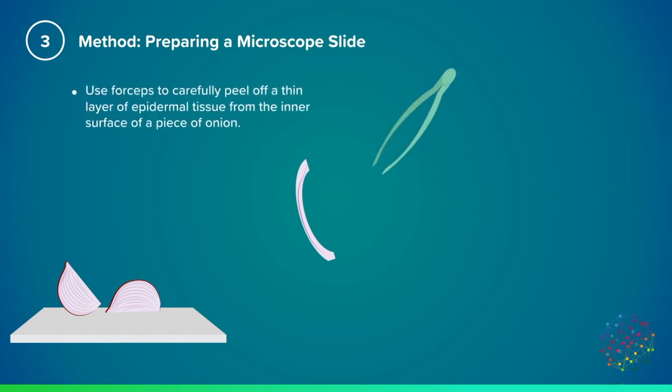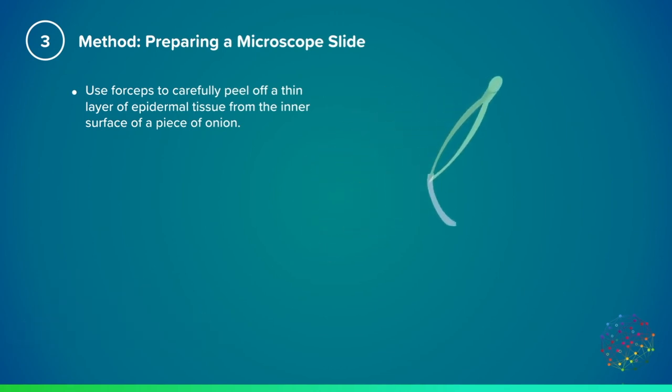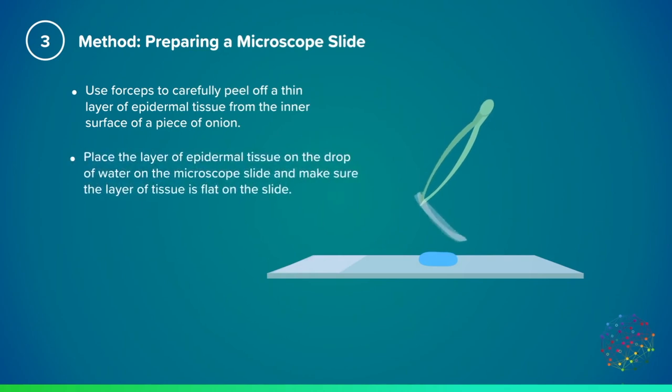Now use the tweezers or forceps to carefully peel a thin layer of the epidermal tissue from the inner surface of the piece of onion. It will be an opaque layer of cells that you can then put onto the microscope slide, making sure it's nice and flat on the water drop to be held on.